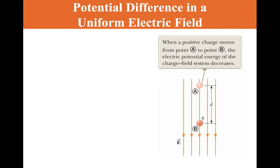Well, of course, since it's positive, it's going to move away from the source of the electric field. It's going to move downward. When a positive charge moves from point A to point B, the electric potential energy of the charge field system decreases, just as when you have a mass that's descending in a gravitational field, the gravitational potential energy decreases.